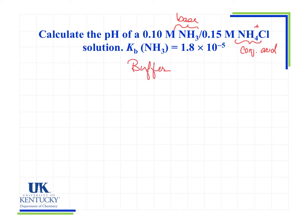Any time we want to calculate the pH of a buffer, we should use the Henderson-Hasselbalch equation: pH equals pKa plus the log of the concentration of base over the concentration of acid.